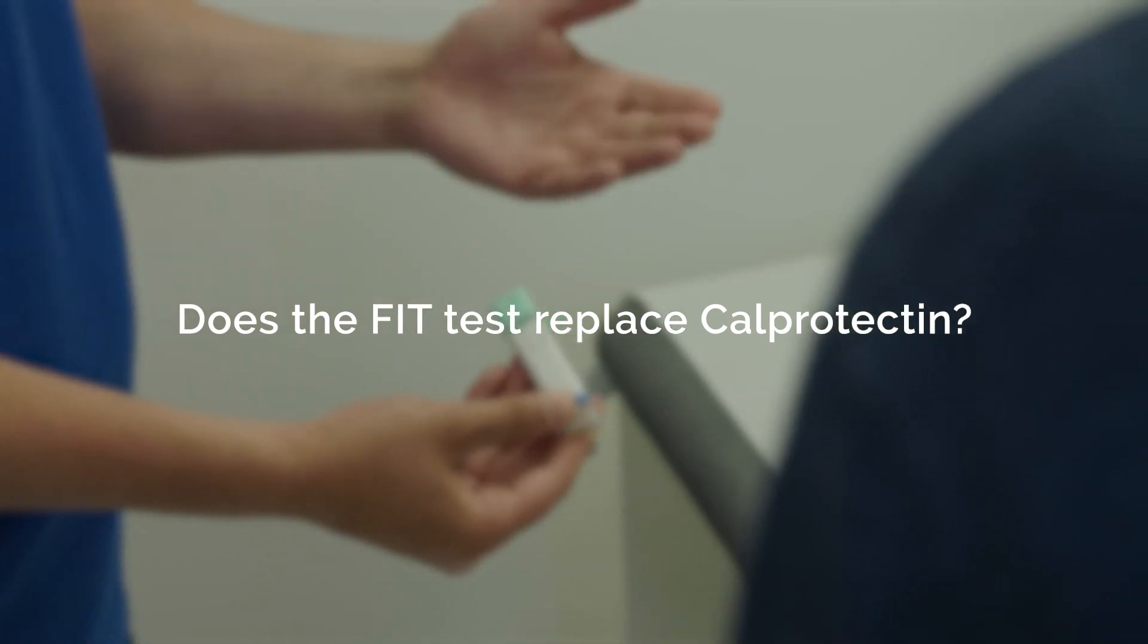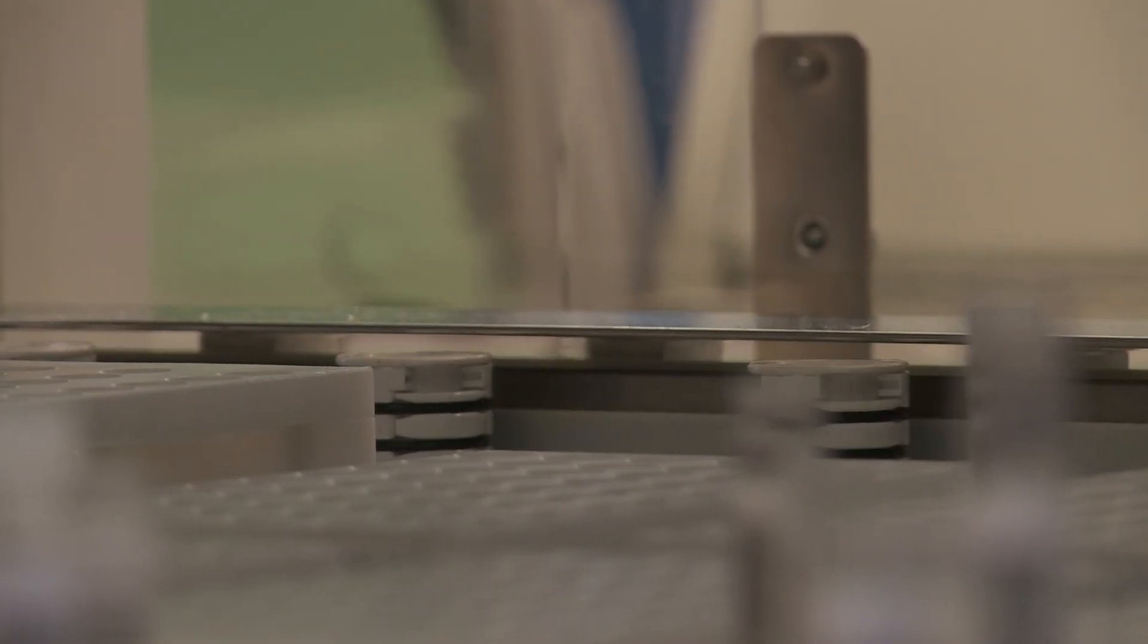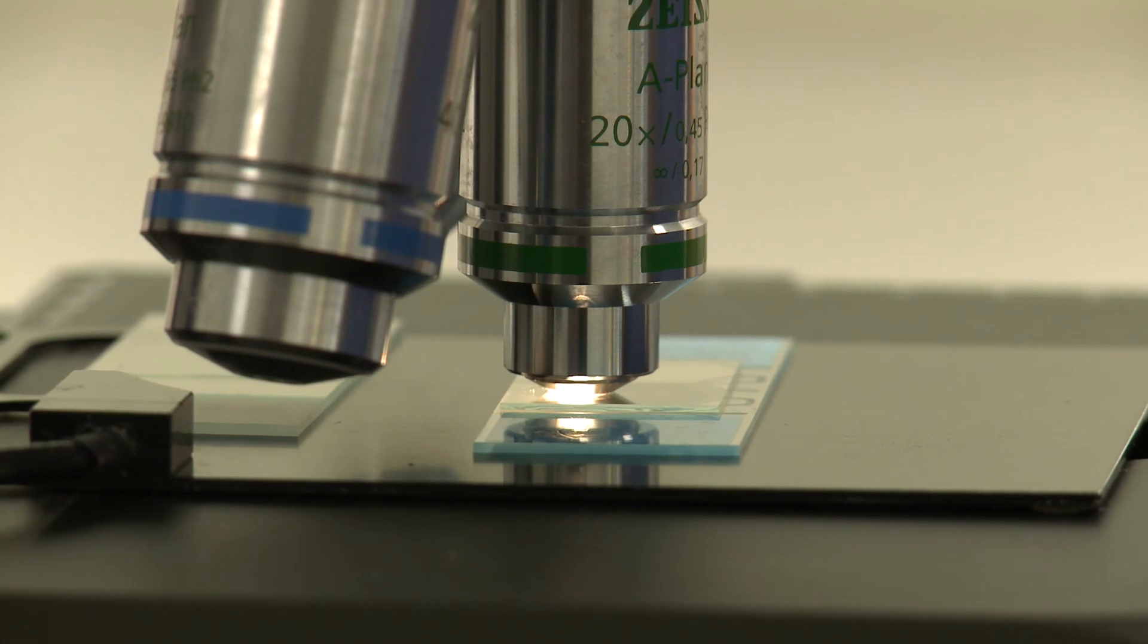The FIT test can't be used in place of calprotectin for investigating patients for IBD or IBS. The tests look for two very different things. QFIT is looking for blood in faeces, so it's looking for red cells. Calprotectin is looking for evidence of inflammatory disease and it's looking for white cells.